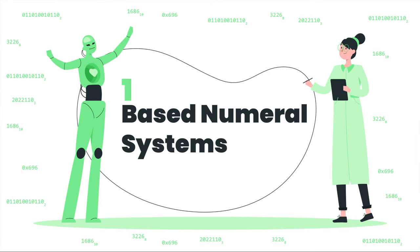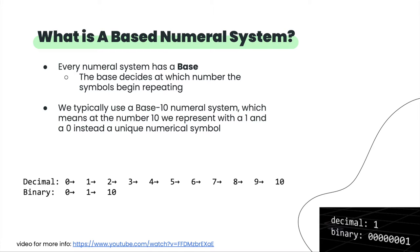Every numeral system — meaning the way that we represent numbers — has a base. The base decides at which number you start repeating symbols rather than making a new unique symbol. In the way we normally look at numbers, we call our number system a base-10 number system, because once we get to 10, instead of having a new unique symbol, we represent it as 1 and 0. It's sort of arbitrary, and you can actually use a number system with any base.